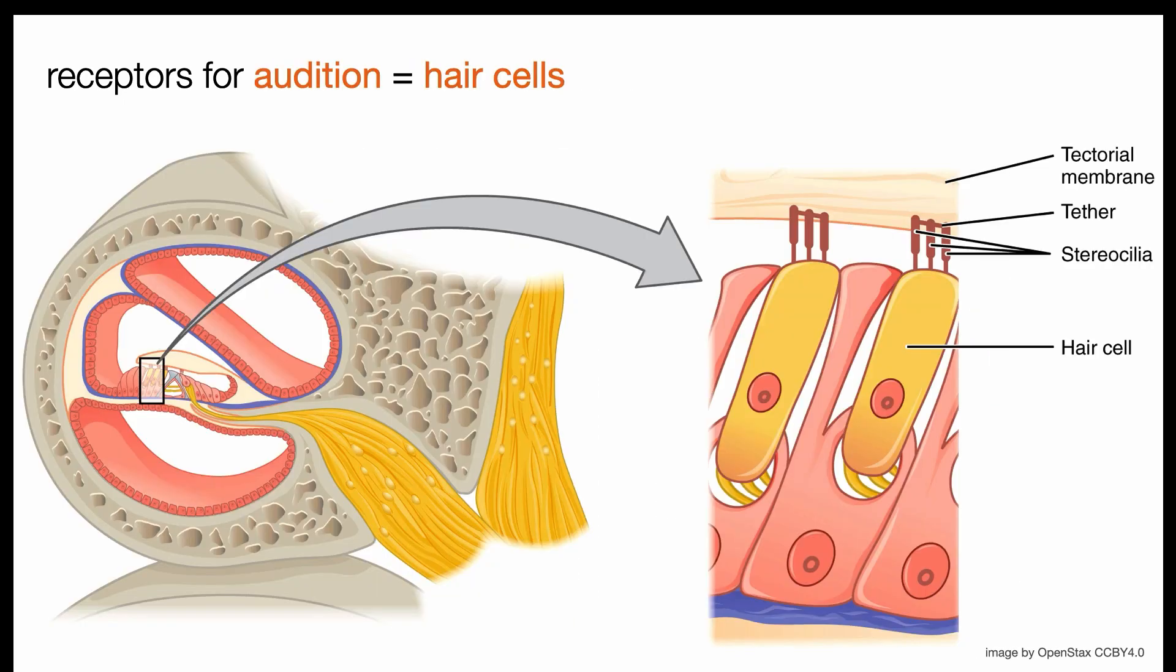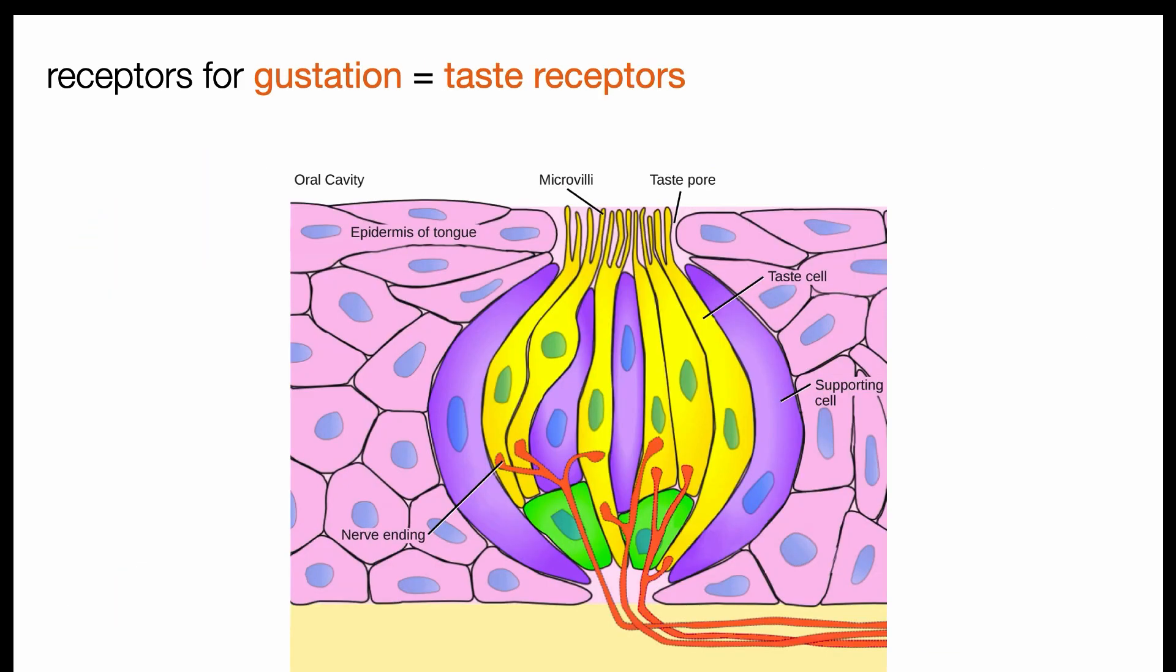The receptors for audition reside deep within the inner ear. These receptor cells are called hair cells because they contain little projections called stereocilia that look like hair sticking out of them. And one more example, the receptors for gustation, or taste, are called simply taste receptors and are located deep in the crevices of the tongue.